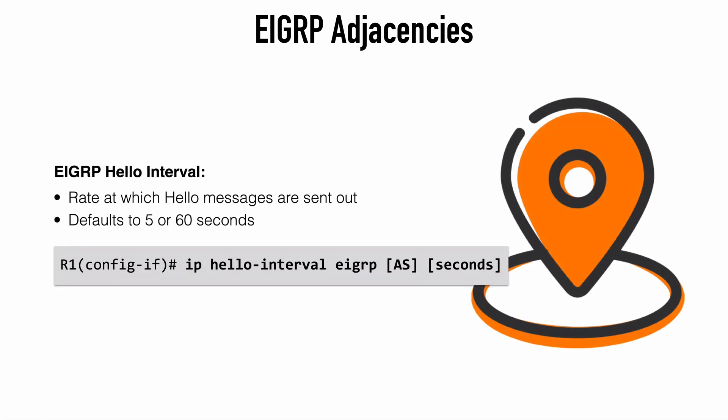A couple of things that are missing from our must-match parameters are the hello and hold timers. Those timers do not have to match in order for devices to become EIGRP neighbors. The hello interval is the rate at which EIGRP sends out hello messages. This can be changed on a per-interface basis with the command IP hello-interval EIGRP, followed by the autonomous system number and the number of seconds for that interval. On slower interfaces such as NBMA running at T1 or lower speeds, the default hello time is 60 seconds. For all other interface types, such as a GigabitEthernet interface, the default is 5 seconds.